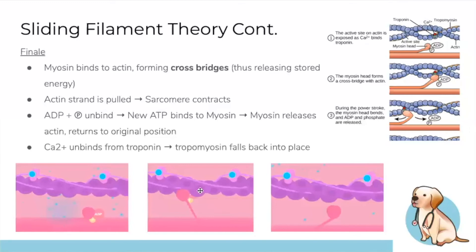The cycle continues — ATP binds, breaks down to ADP and phosphate, myosin cocks, binds actin, pulls, releases — over and over. When the brain stops the signal, calcium release stops. Troponin and tropomyosin fall back into place, covering the actin binding sites, and myosin can no longer bind — so the muscle relaxes.